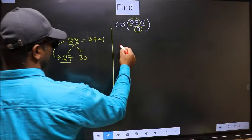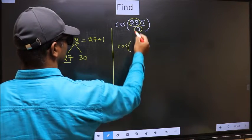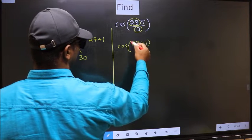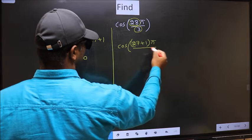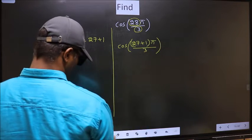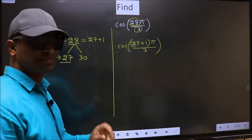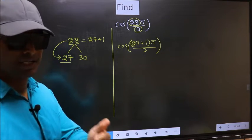This will become cos. In place of 28, now I write (27 + 1)π/3. This is your step 1.